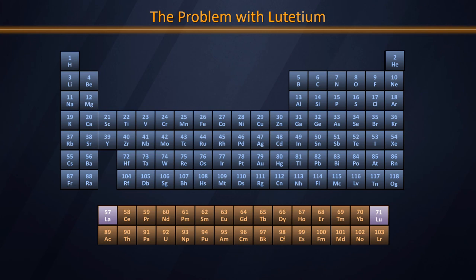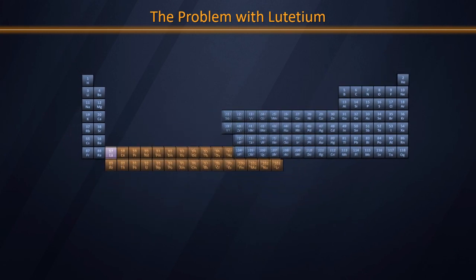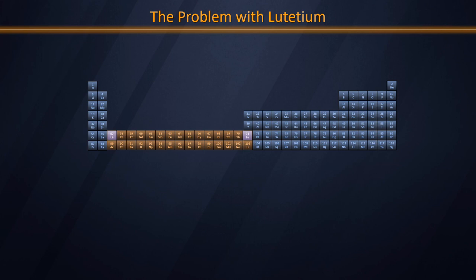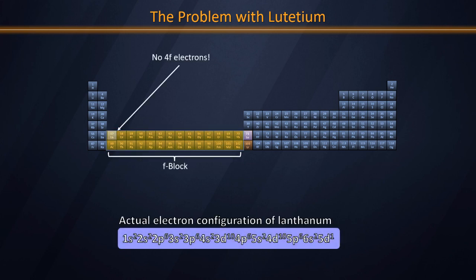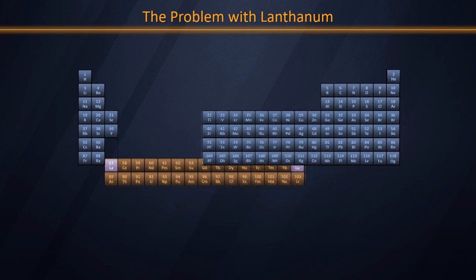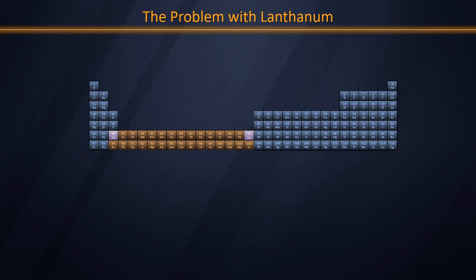We need to consider what happens when we insert each element into the expanded table — that is, with the f block inserted into the main table rather than set off at the bottom. If we include lutetium and lawrencium in group 3, we get a satisfying table with the s, p, d, and f blocks all consolidated. However, we put an element in the f block that has no 4f electrons whatsoever, violating that principle. On the other hand, placing lanthanum and actinium in group 3 — while preserving atomic number trends — splits the d block and creates a tremendous eyesore. Furthermore, because both lanthanum and lutetium have very similar outer electron configurations, their chemistries are quite similar, so we can't separate them on that basis either.